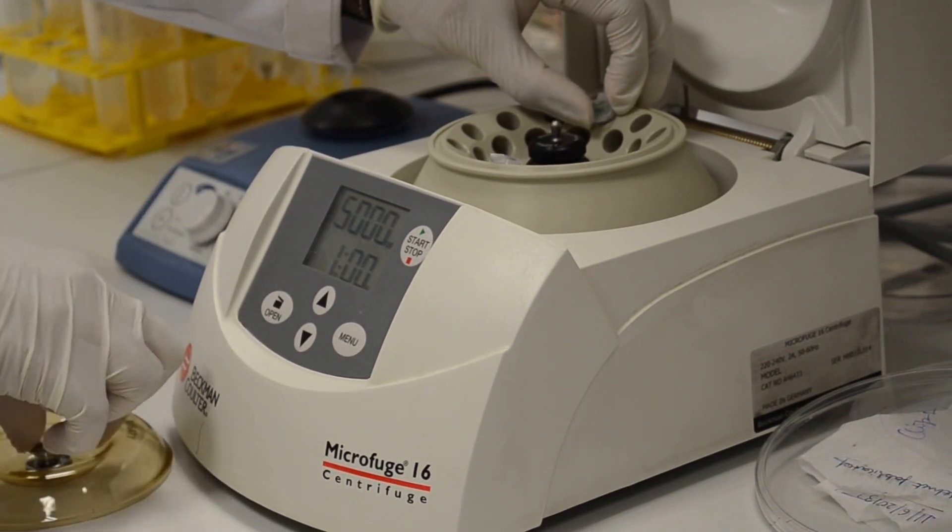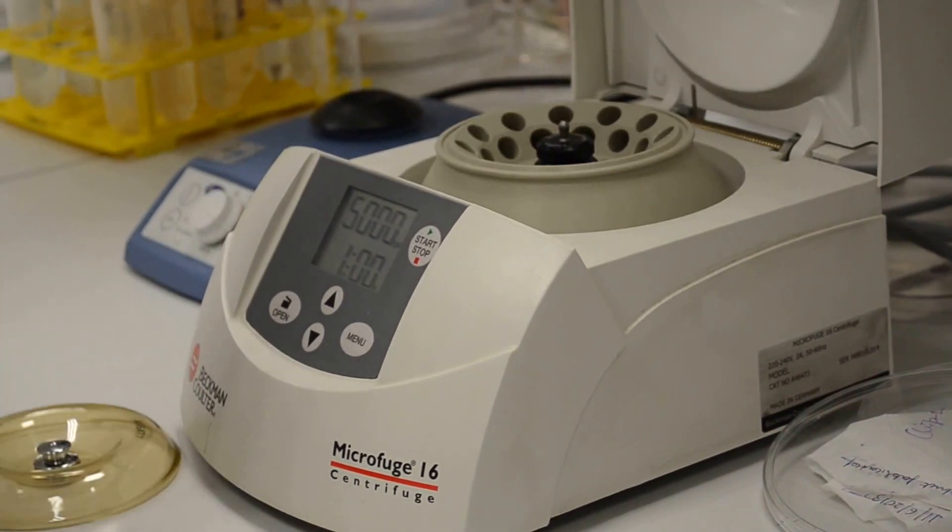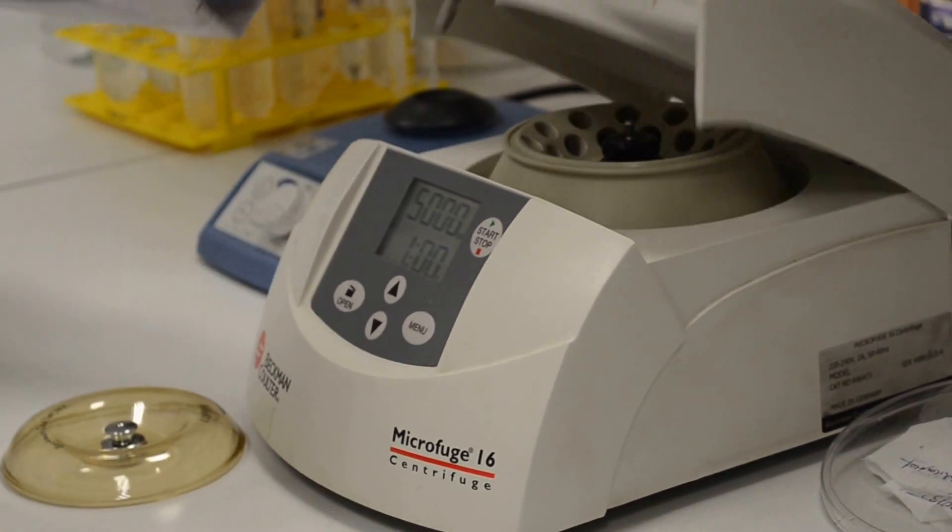Now the tubes are centrifuged and the supernatant will be taken out. After taking out the supernatant, we will come back and see again in the UV transilluminator.